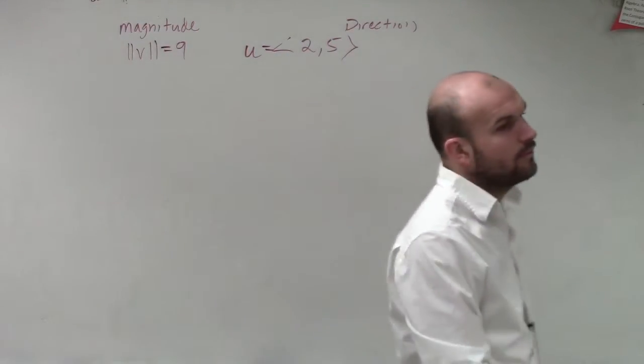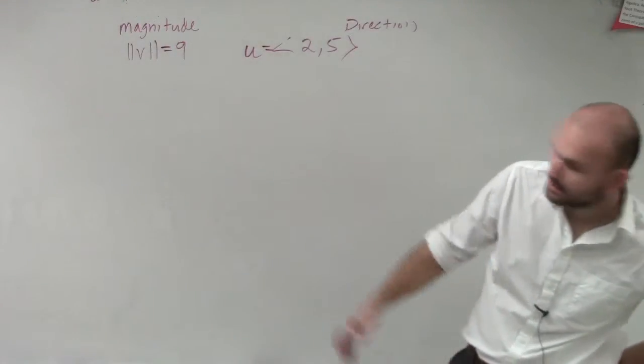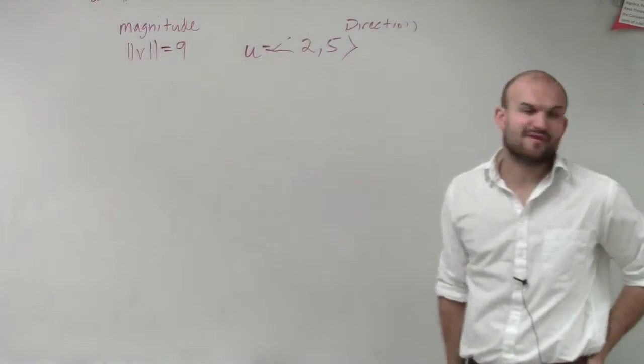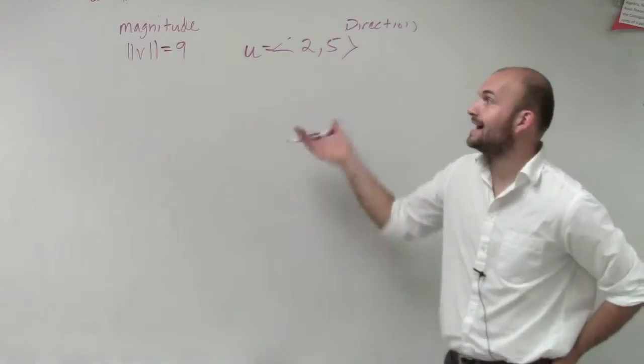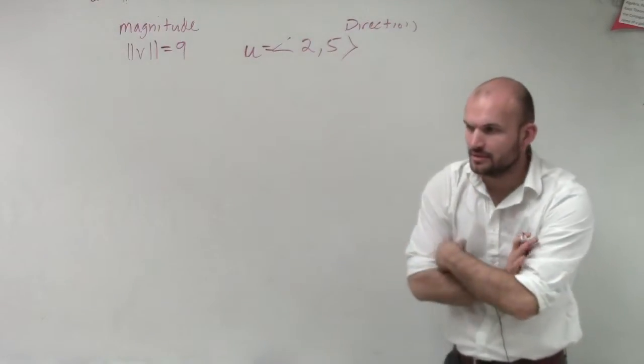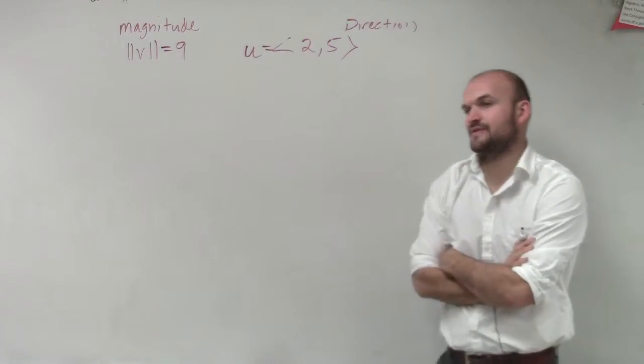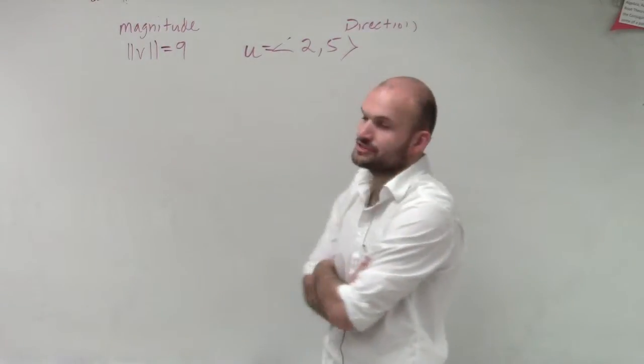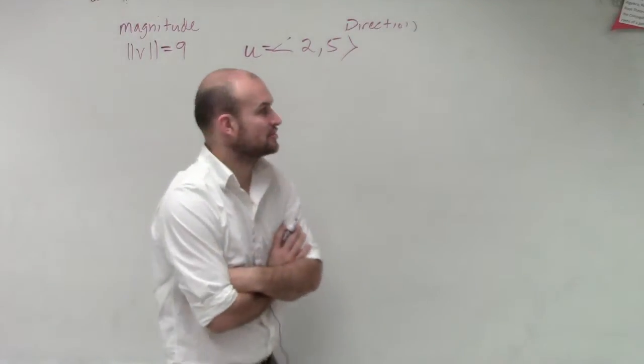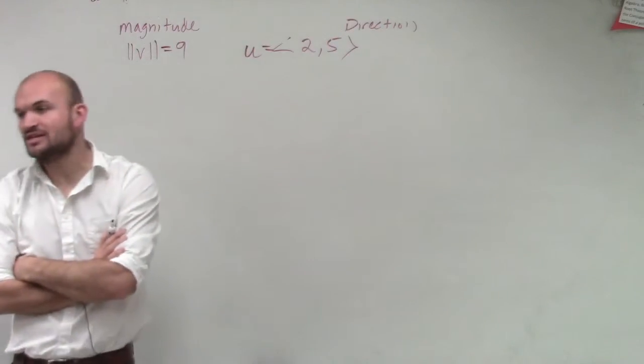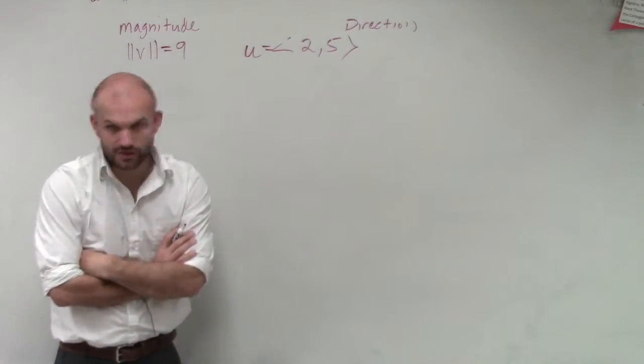What we have here is the magnitude of a vector v and the direction of an angle u. What I want to do is create a vector v that has a magnitude of 9 but creates the exact same direction as my vector u.